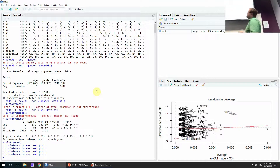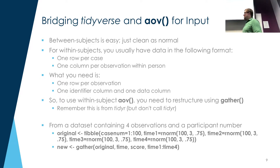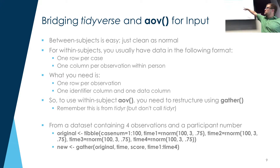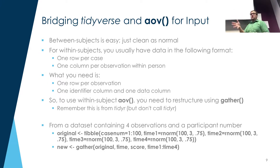Bridging tidyverse: between-subjects is easy because you have one observation per person with some number of predictor variables per person, and you can just run your ANOVA models. Within-subjects is harder — you need one column per observation within person, meaning for participant one you'll have rows 1, 2, 3 for observations 1, 2, 3. But to run ANOVA you need one literal observation per row, so that has to be restructured. The easiest way to do that is using `gather`.